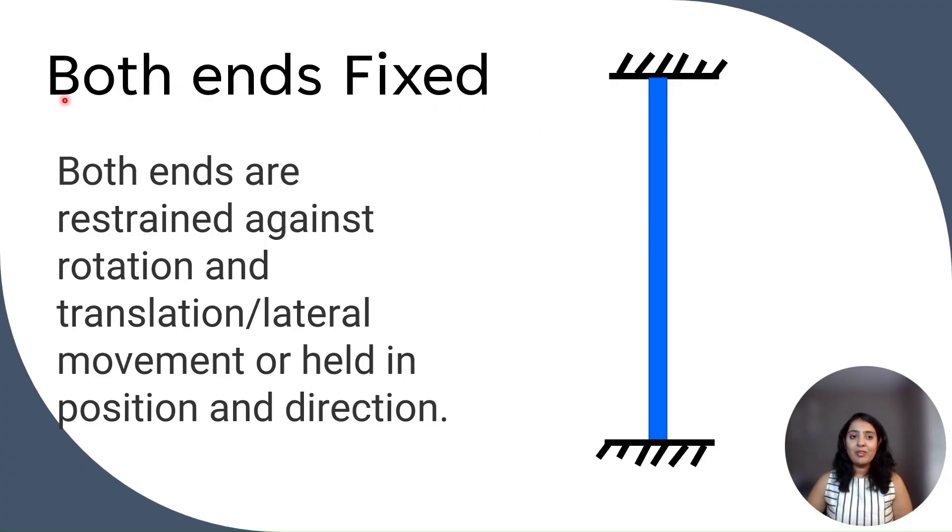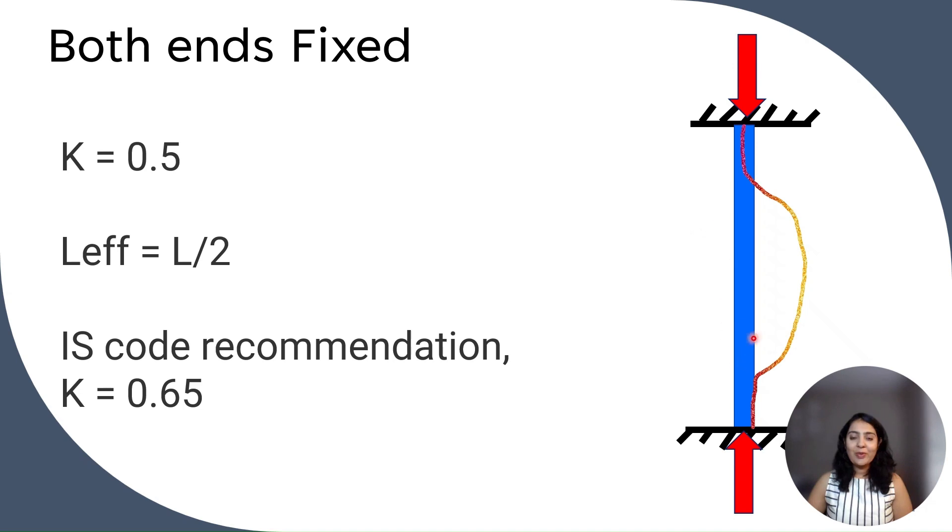The first case is both ends fixed. So here both of the ends are restrained against rotation and translation, that is lateral movement is restricted. So if you apply the load on this type of column which is fixed at both the ends, the buckling curve will be like this. It will be straight at both ends and curved at center.